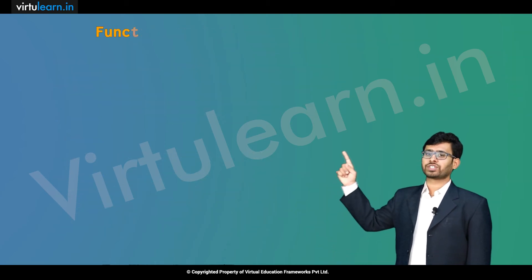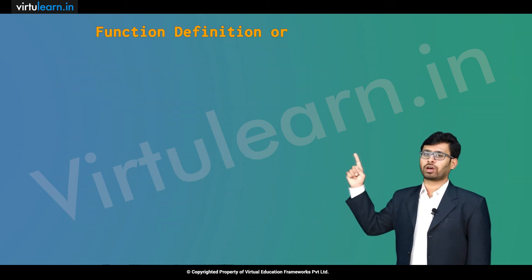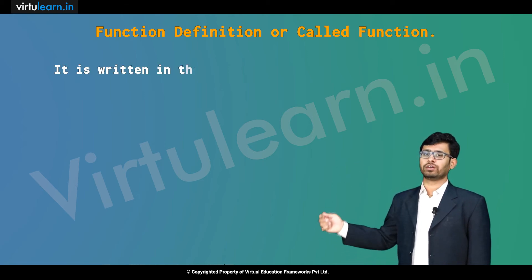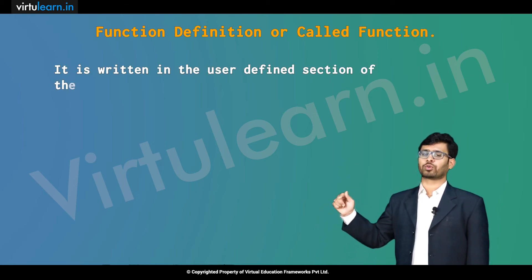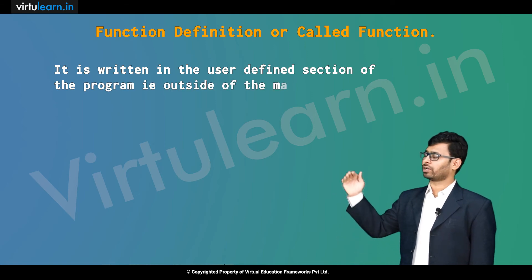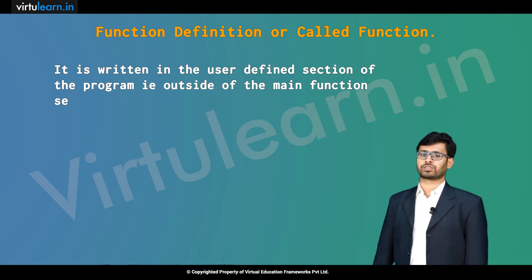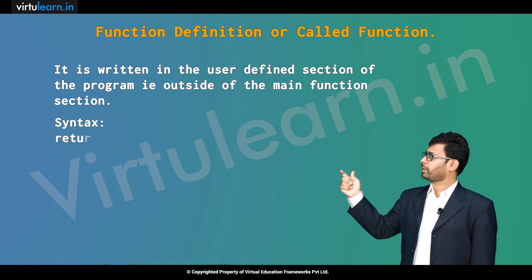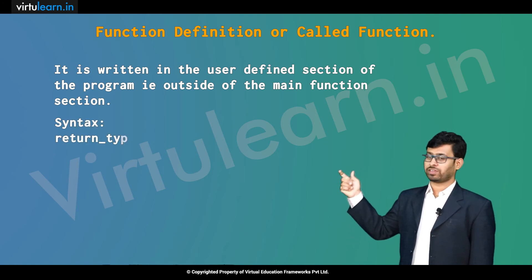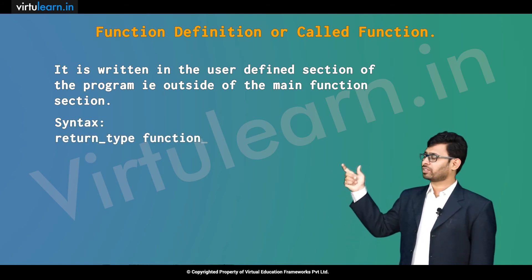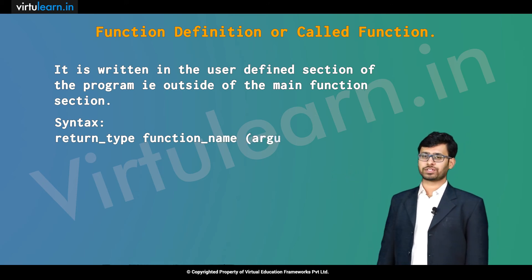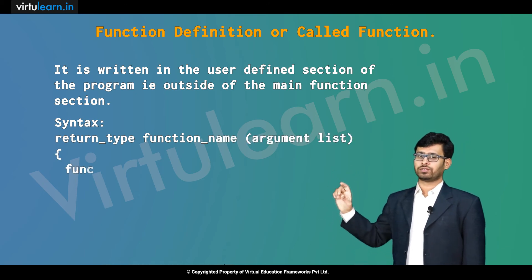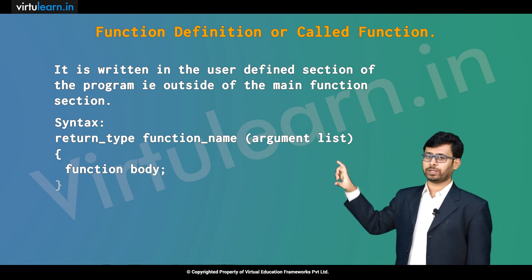The third one is function definition or called function. It is written in the user-defined section of a program, that is outside of the main function section. The syntax for this is: return type, space, function name, within that we specify the argument list, and here there is no semicolon — we just need to represent the function body.